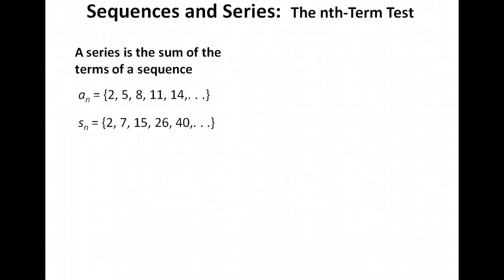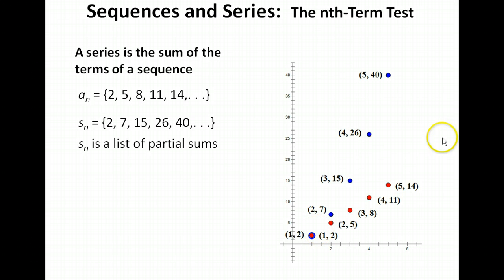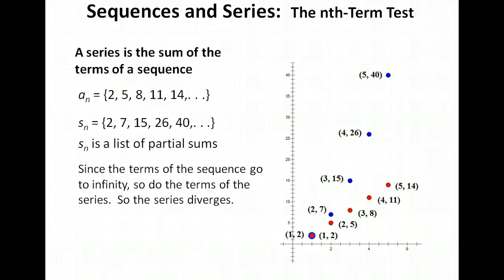Let's look at these on a graph. The numbers 2, 7, 15, 26, and 40 are our list of partial sums, and we continue listing them forever. We use the natural numbers as input and the partial sums as output — notice both the sequence and series share the point (1, 2). If the terms of the sequence go off to infinity, then the terms of the series must also go to infinity. So if this sequence diverges, the series must diverge as well.